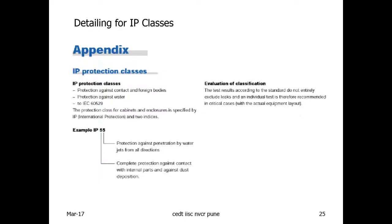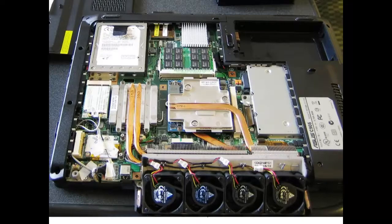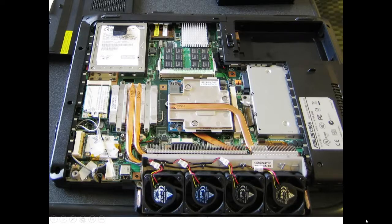IP protection — Index of Protection — covers various classes of protection against water and other elements, which I will cover in a later class. One simple approach for tabletop equipment is to fit a fan for cooling. In an extreme case, a heat pipe system can be used: evaporators and a condenser, with a fan blowing air through, all beautifully sealed. The whole thing works very well — sealed and thermally managed.